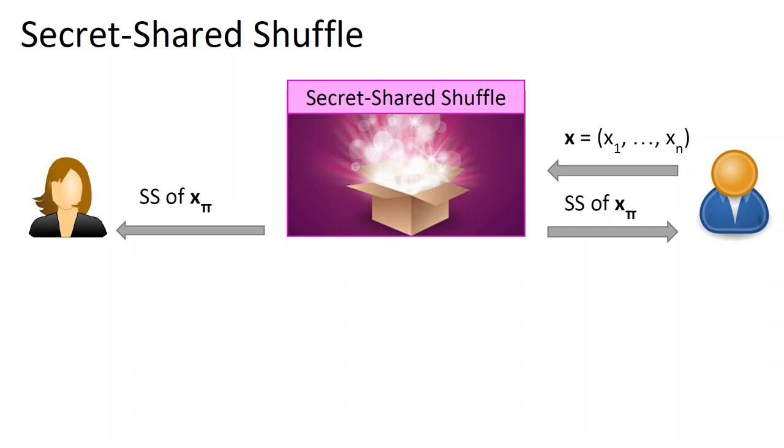What is Secret Shared Shuffle? It is a protocol which allows two parties to obtain secret shares of a shuffled database, where the permutation of a shuffle is hidden. More concretely, assume Bob is an owner of a database X.